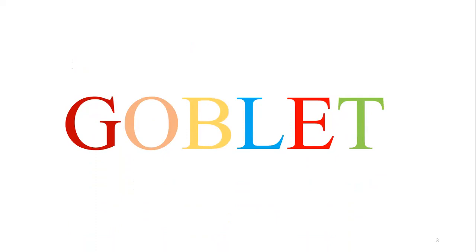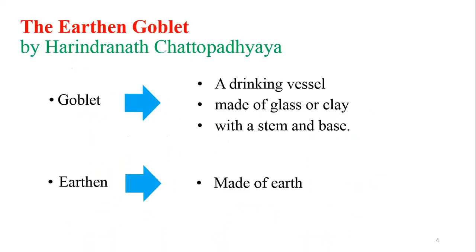We can see what a goblet is. A goblet is a vessel, a drinking vessel. It is made of glass, metal or clay. It has a stem and a base. We can have goblets in different shapes, and sometimes in different colors. We use goblets in our day to day life.